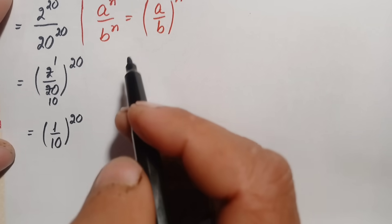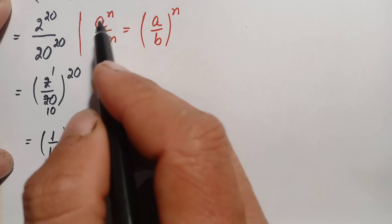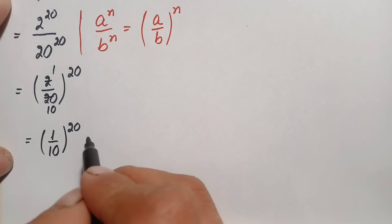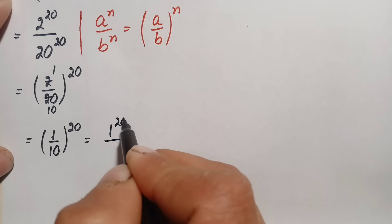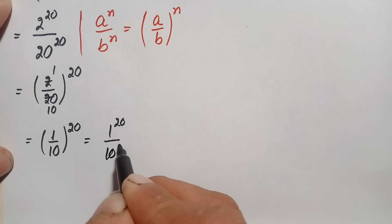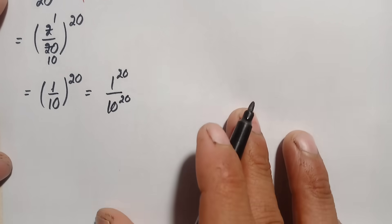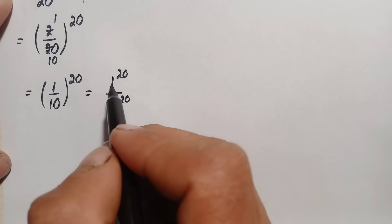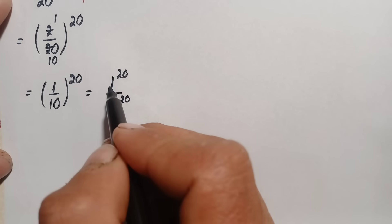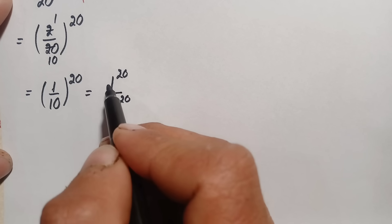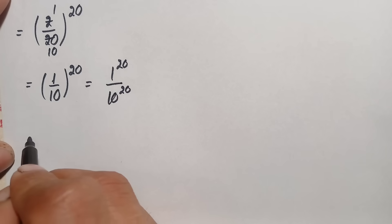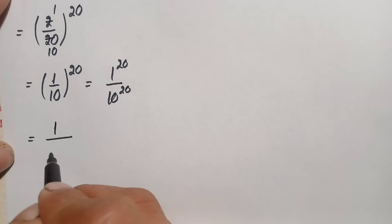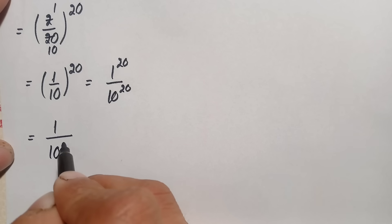Using the same identity, we apply the power to both numerator and denominator: 1 raised to power 20 divided by 10 raised to power 20. Now, 1 raised to power 20 means multiplying 1 by itself 20 times — which is always 1 — so this becomes 1 divided by 10 raised to power 20.